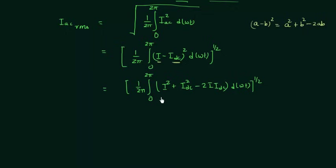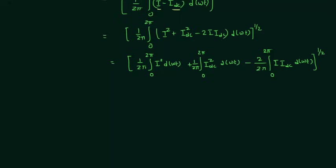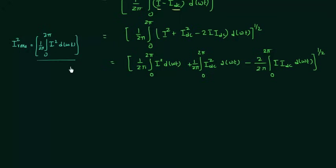Integrating each term individually, we have: (1/2π)·∫₀²π I² d(ωt) plus (1/2π)·∫₀²π IDC² d(ωt) minus (2/2π)·∫₀²π IDC·I d(ωt), all to the power 1/2. We already know that IRMS² equals (1/2π)·∫₀²π I² d(ωt), so this first term is simply IRMS².